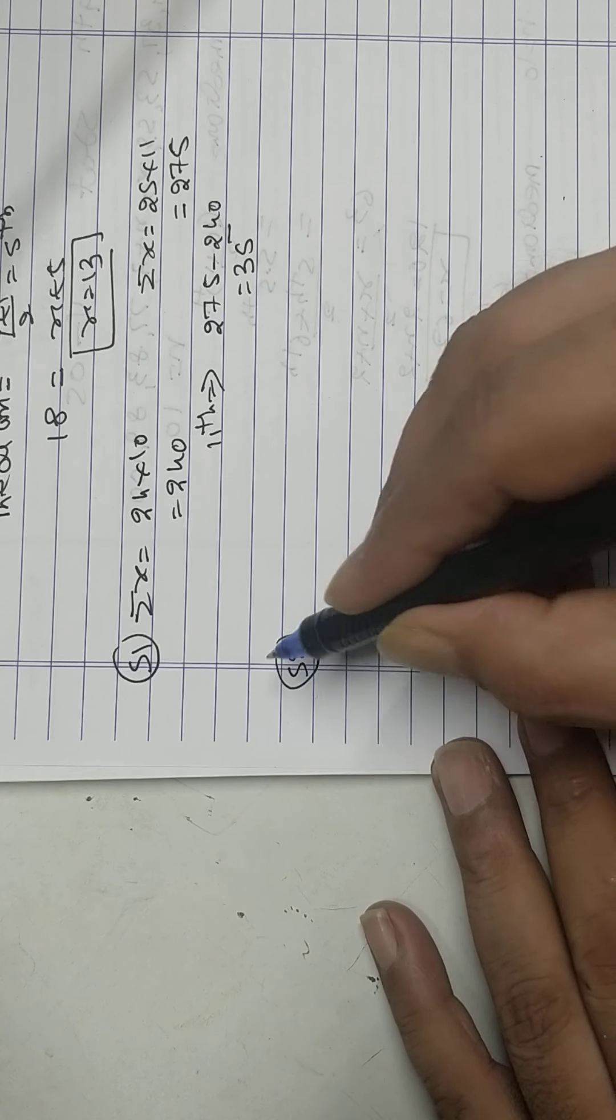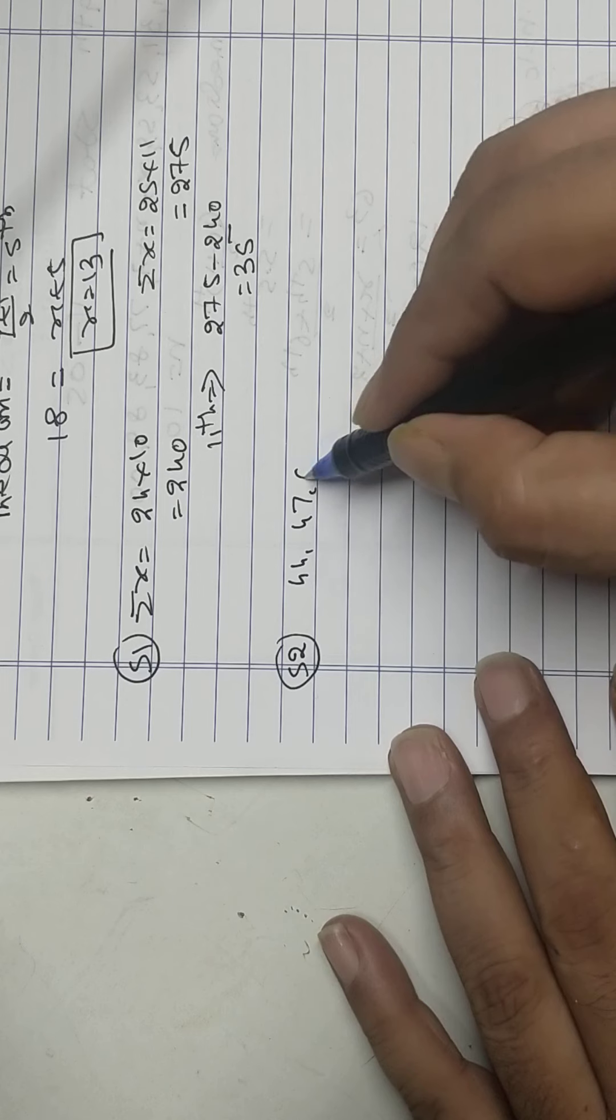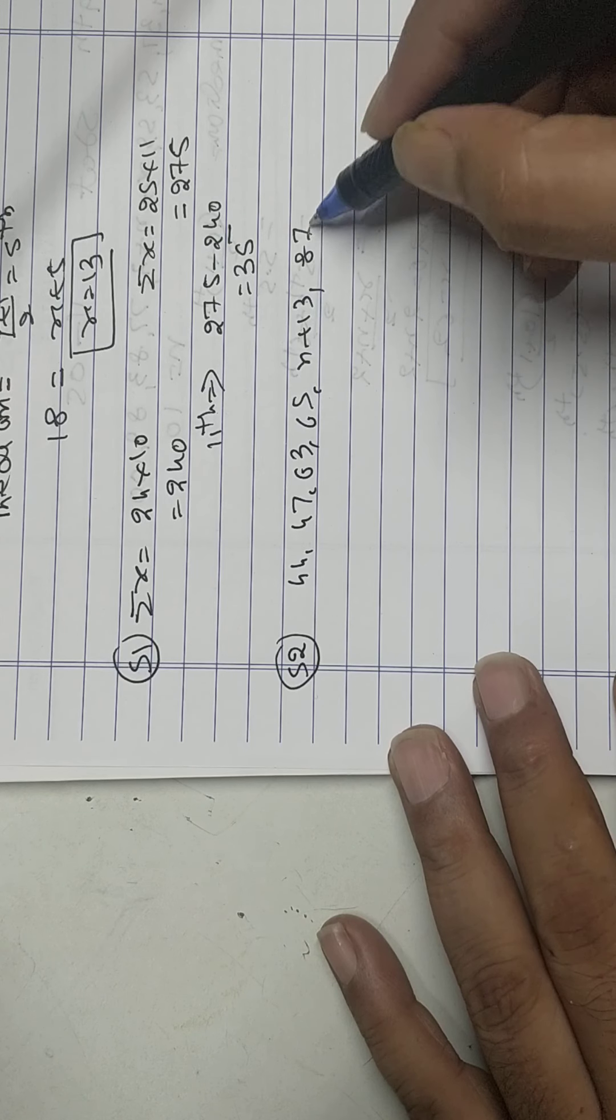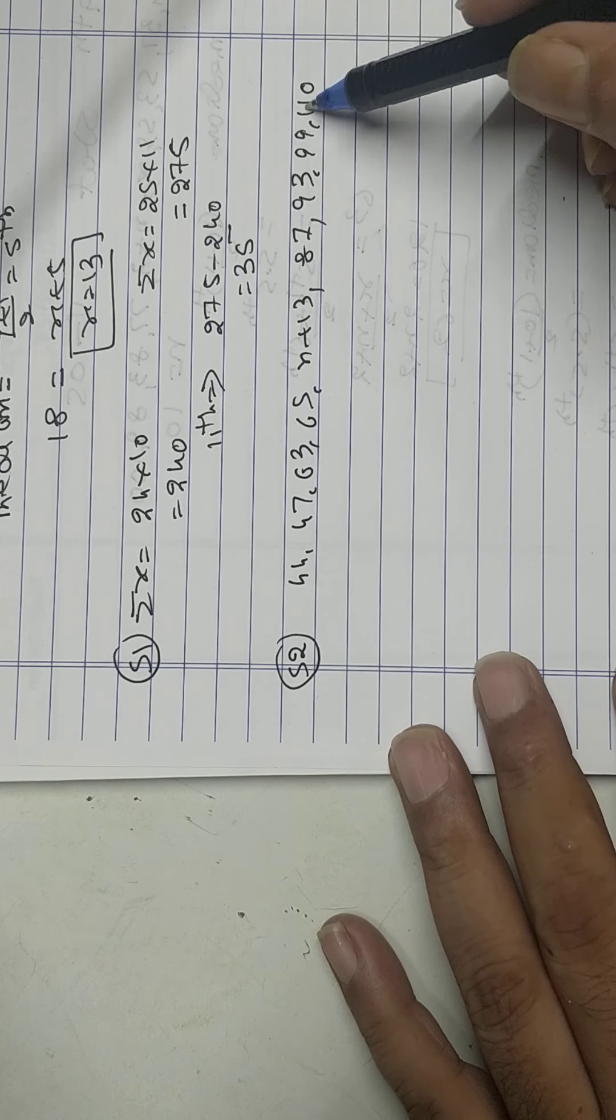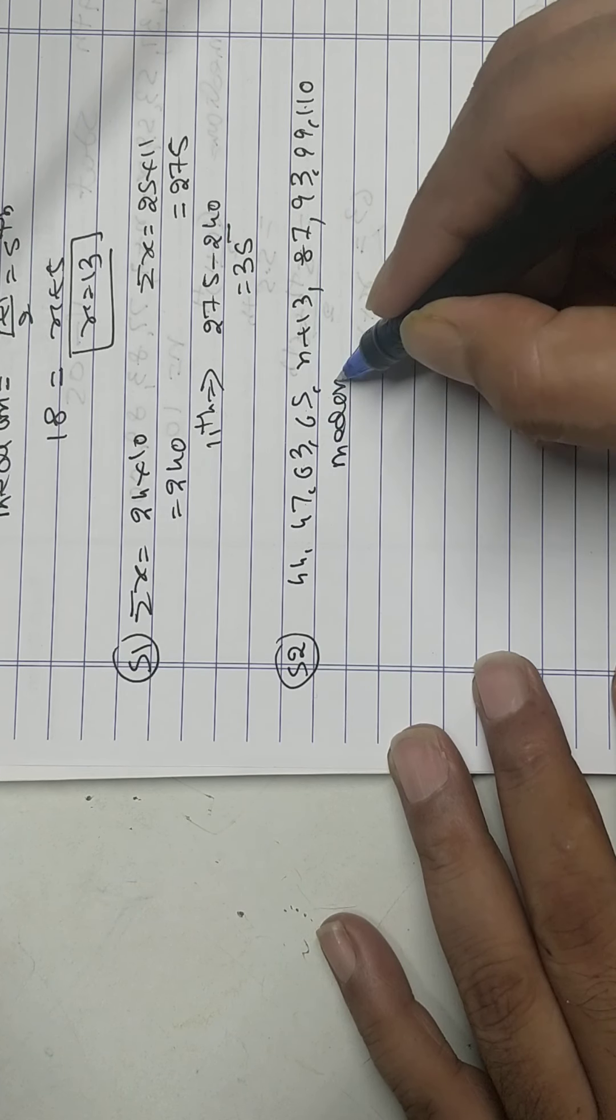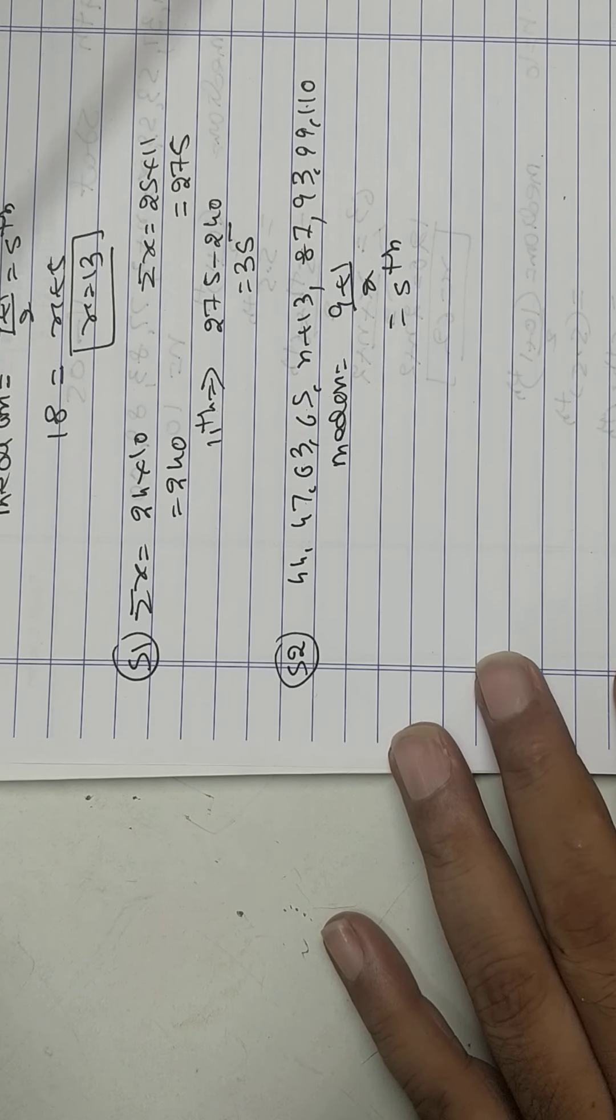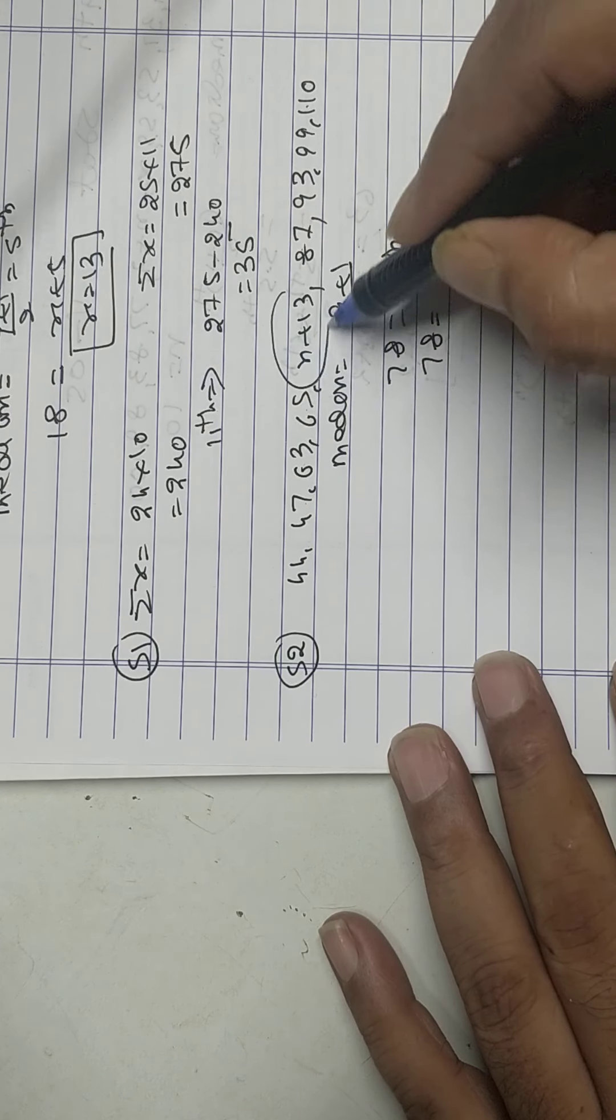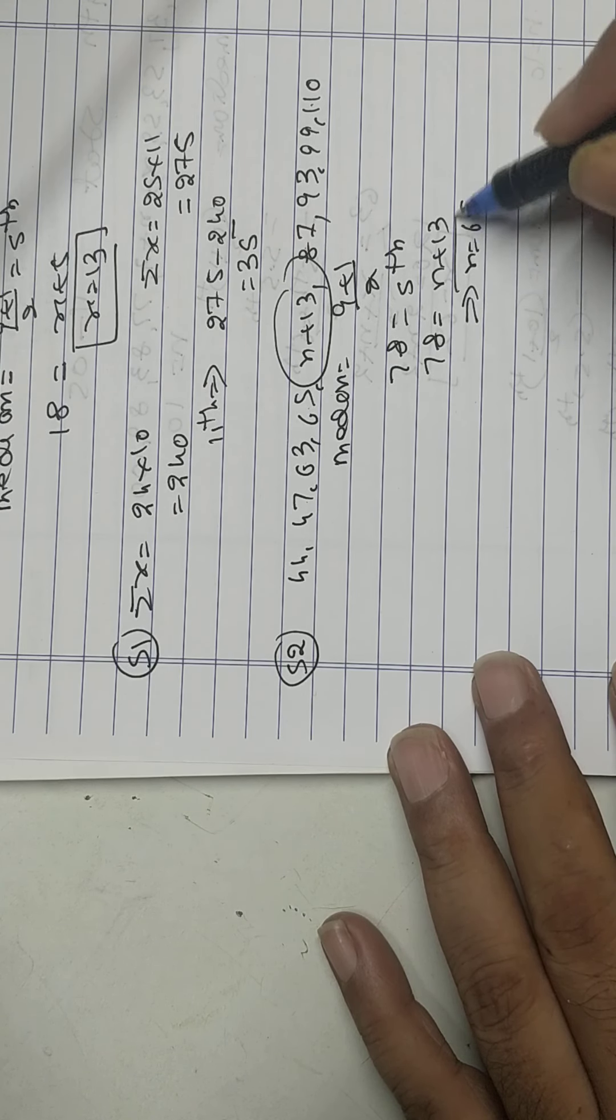Problem 52: Already arranged in ascending order. Odd number, so median 9 plus 1 upon 2, that is 5th number. Median already given 78. So the 5th number is x plus 13, implies that x equals 65.